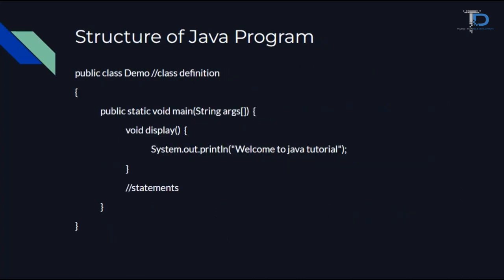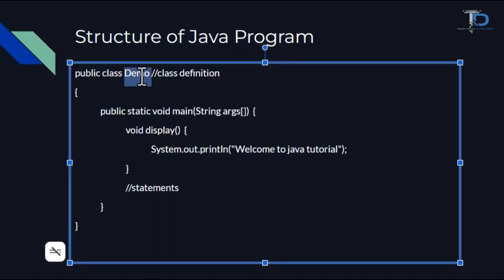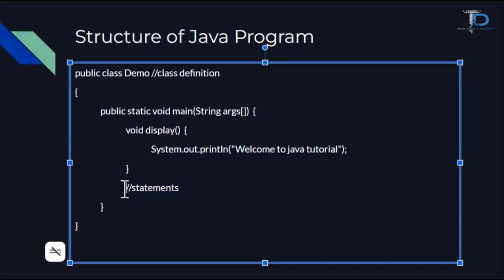Now we will know what the basic structure of Java looks like. We can see that a public class has been created — this 'Demo' is called our class. Then we have the main method: public static void main, String args. And then we have a basic method to create a view: void display, System.out.println, and 'Welcome to Java Tutorial'. Here we also have other statements, which are one-line comments — we use two slashes in Java.